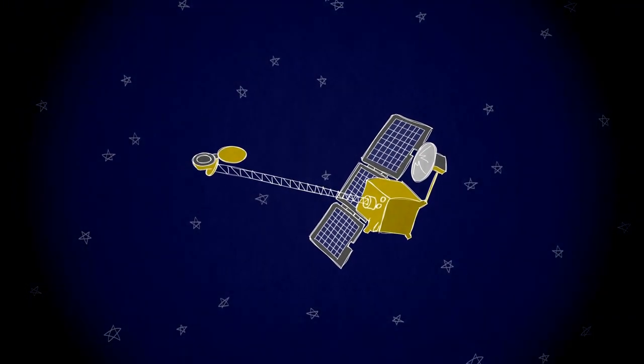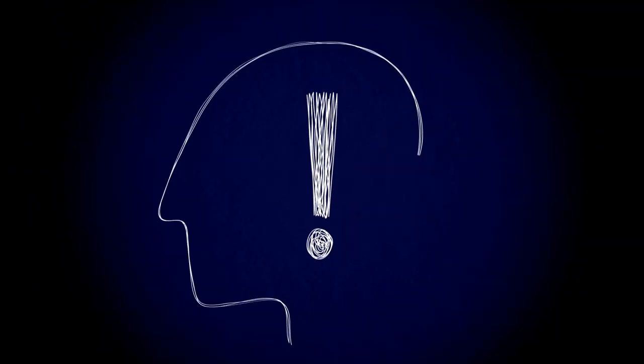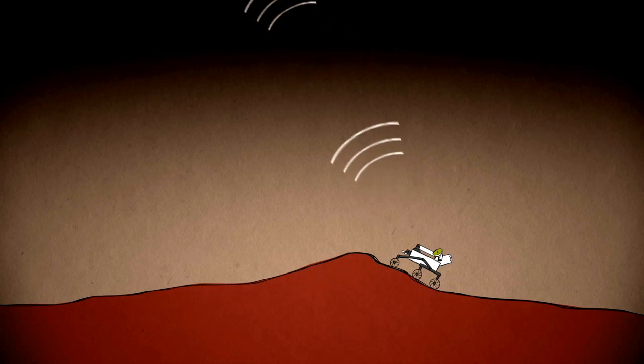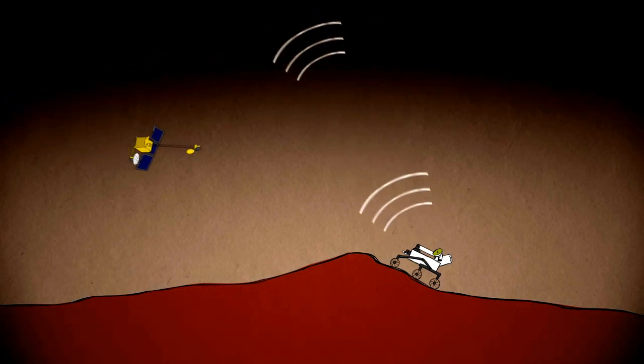Odyssey could perform as hoped, but we're still not home free. Engineers always think of what ifs. For instance, what if the rover lands on a slope? If so, the low-flying Odyssey orbiter might not be able to pick up its signal.